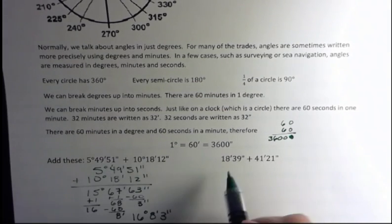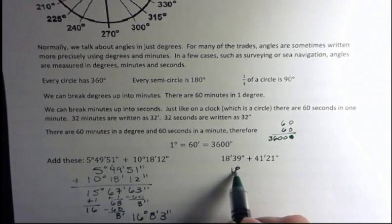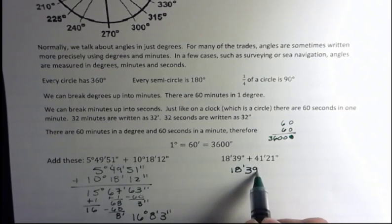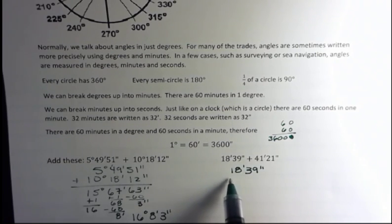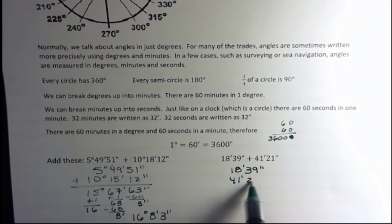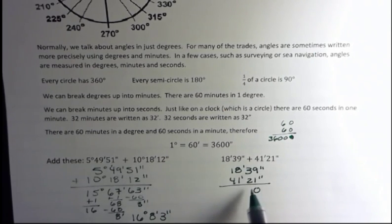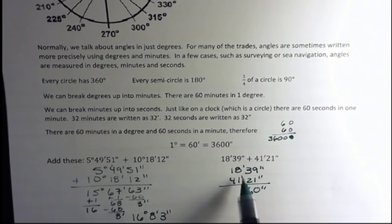What about this one? I don't have any degrees here. I have 18 minutes. These are really, really small angles, I can tell you that. And then I have 41 minutes, 21 seconds. Well, when I get 39 and 21, I get 60 seconds. So if I take 60 away from this, I have zero seconds left. Then I'm going to carry one, and I have 60.